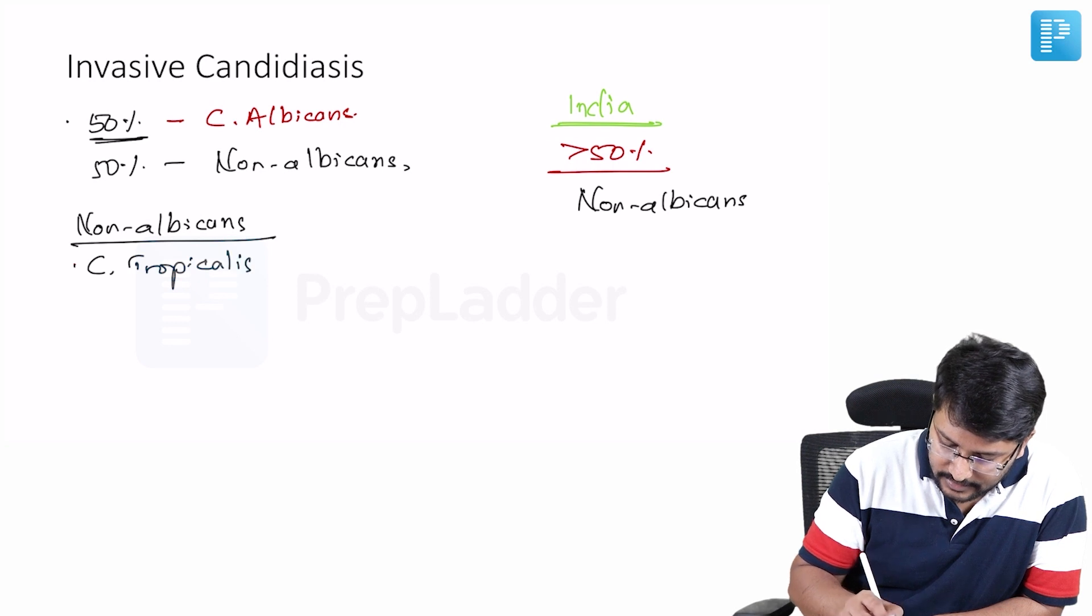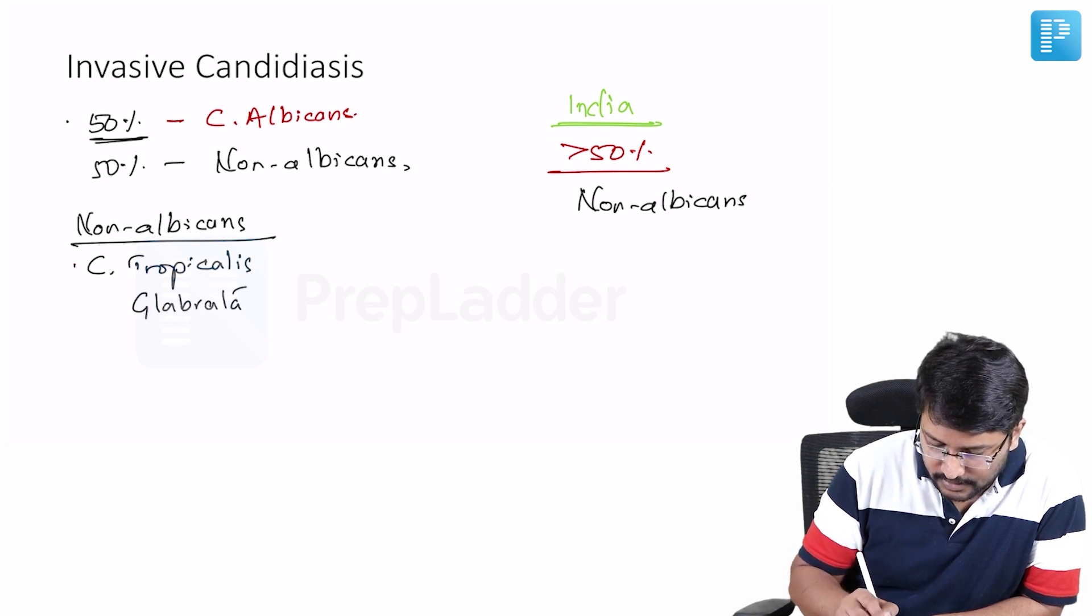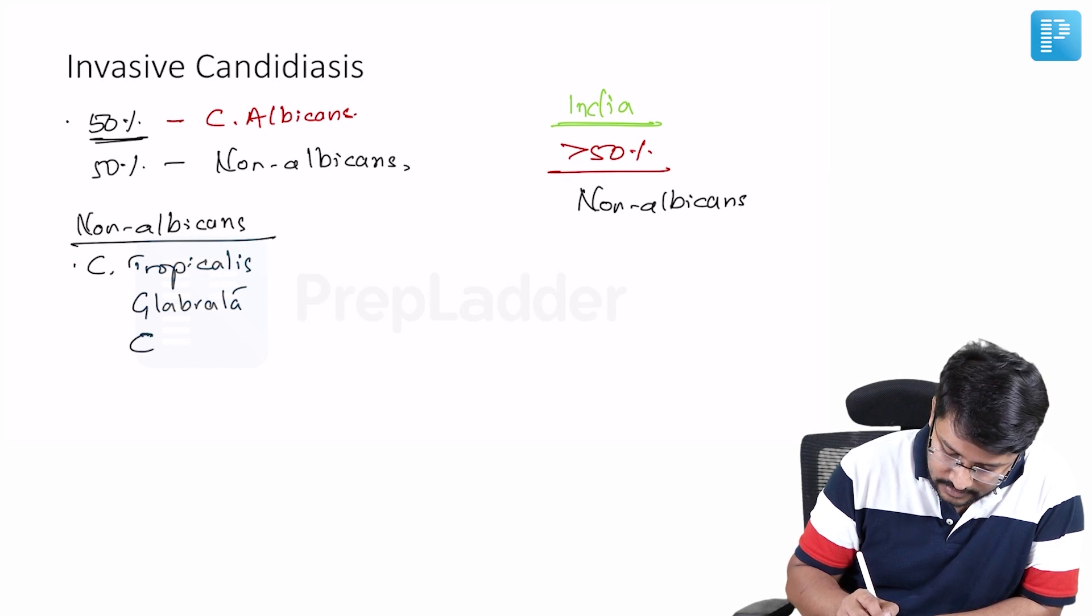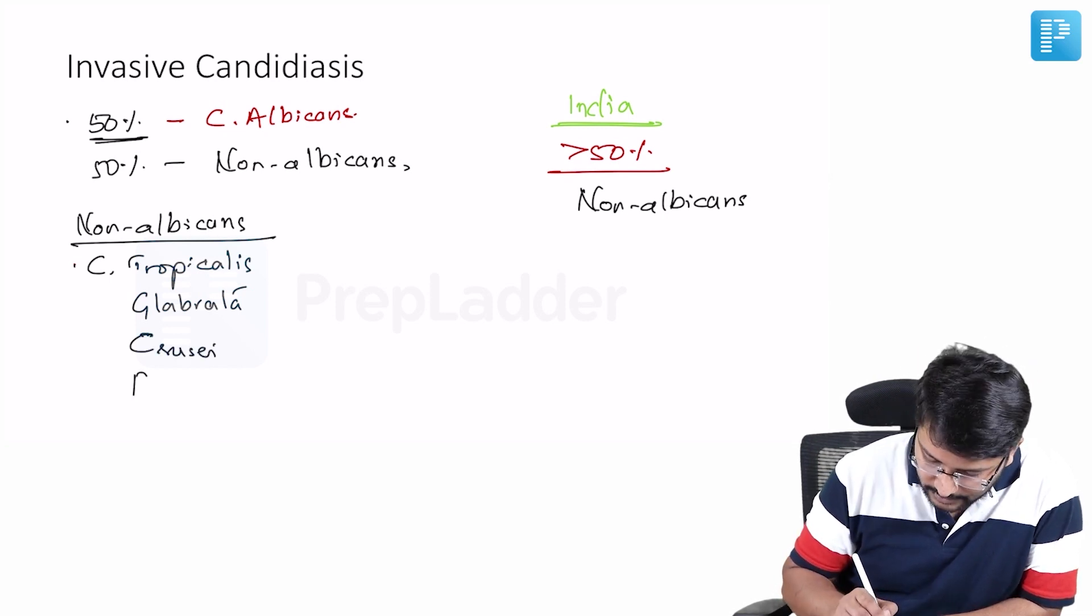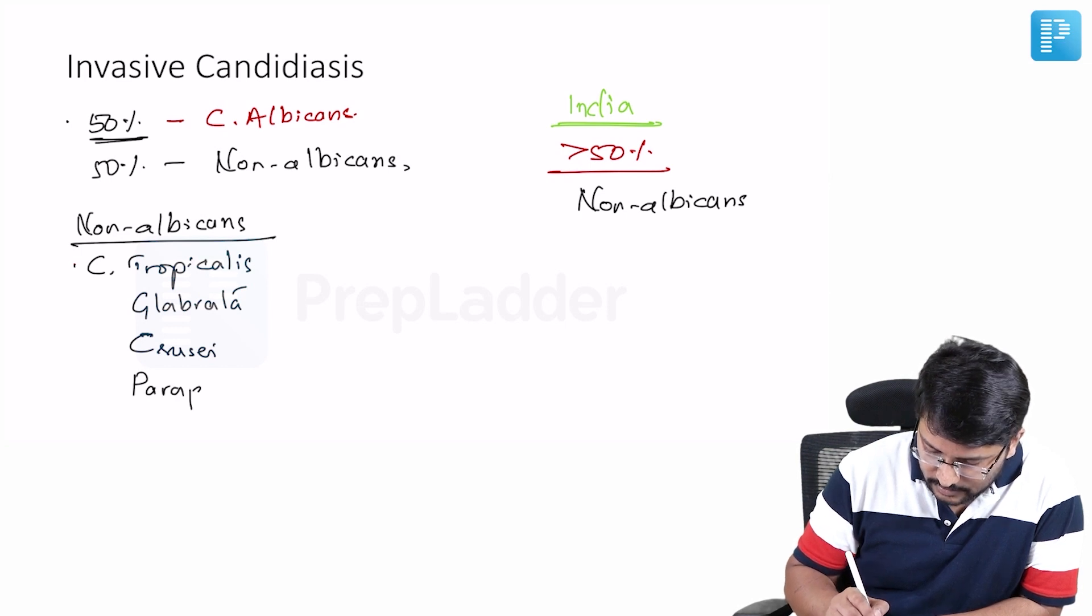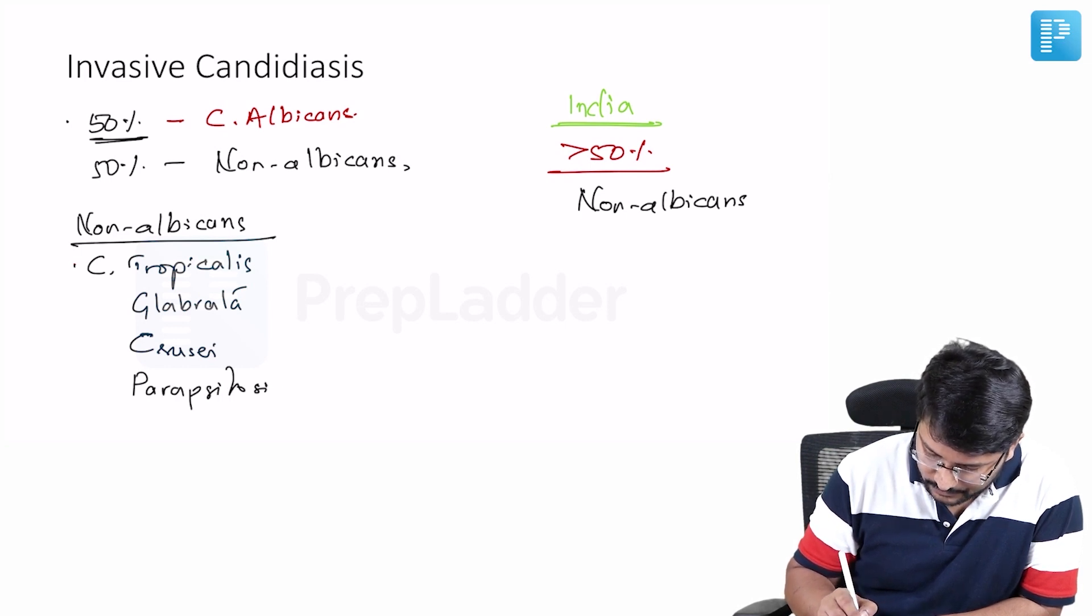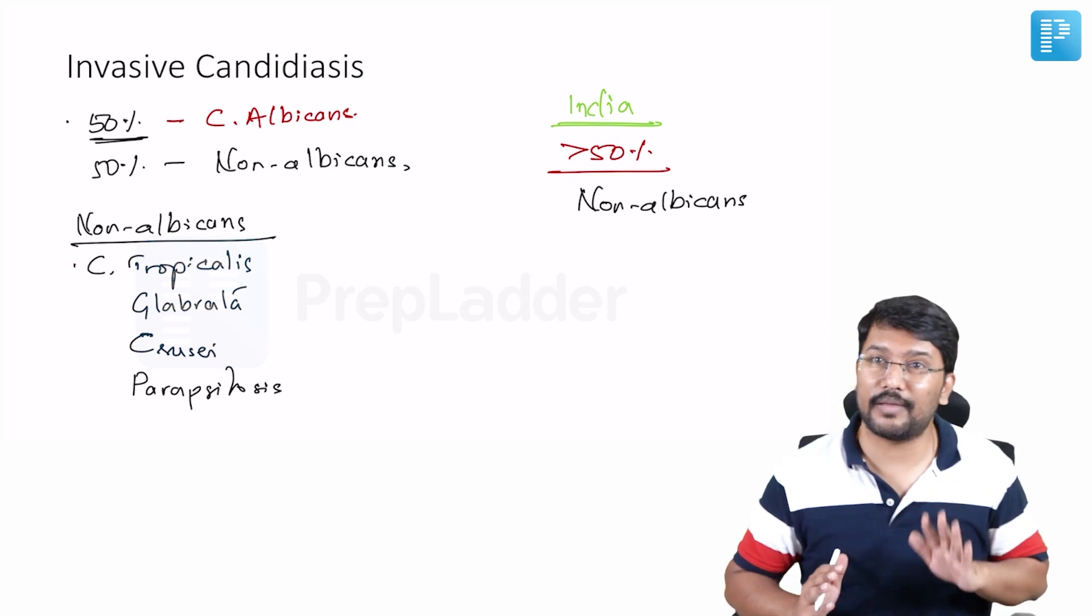The third one is Candida crusei. And the last one is Candida parapsilosis. Candida parapsilosis, the four important species.